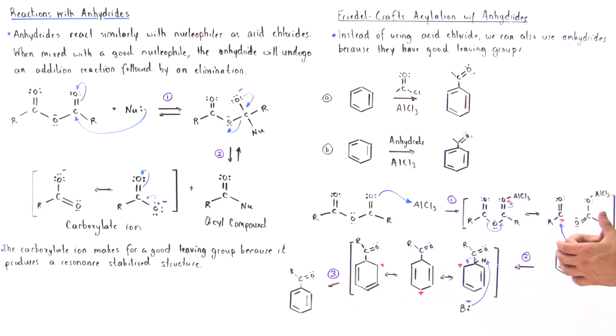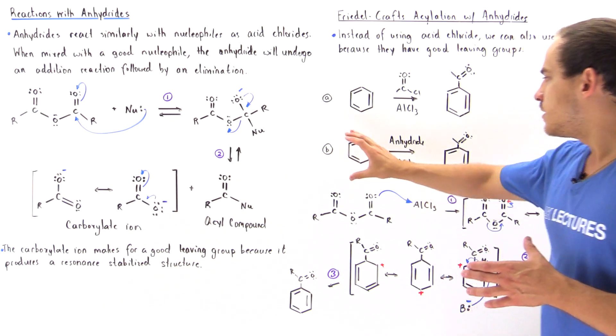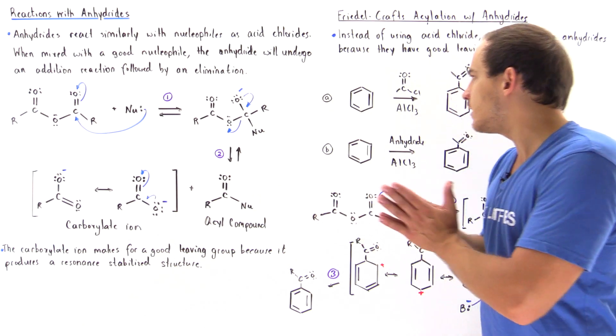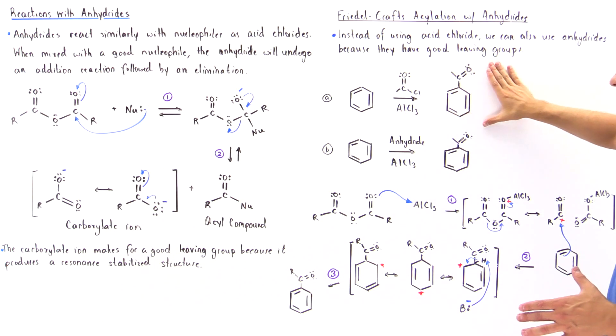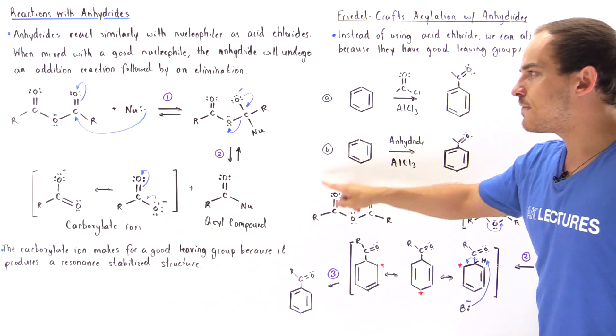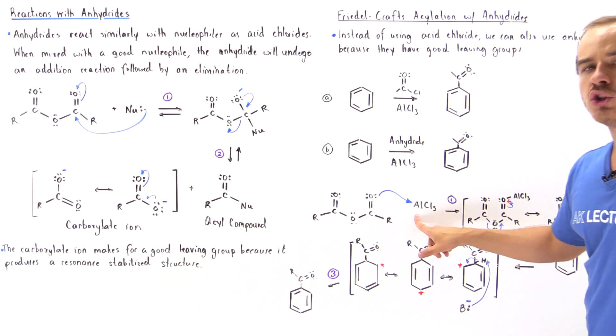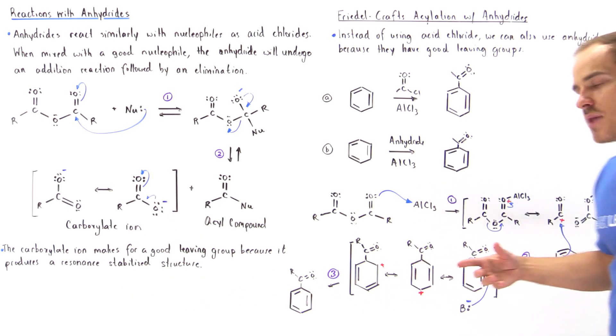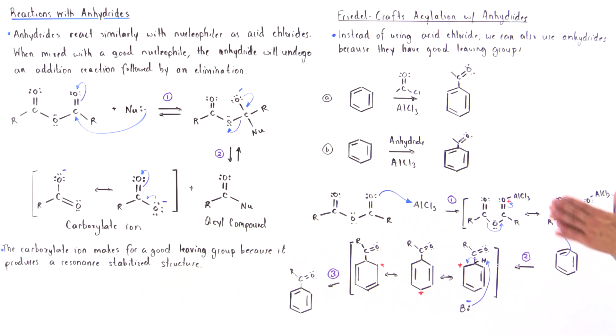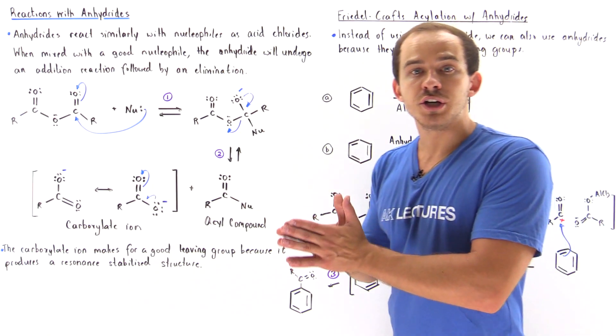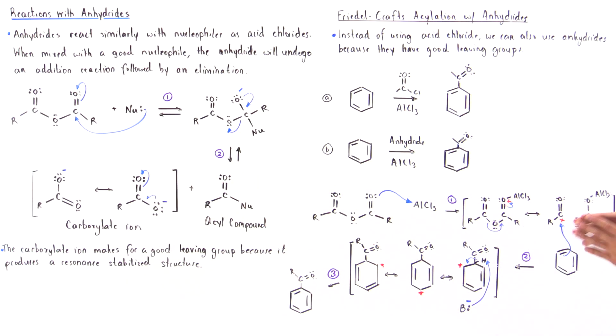So let's look at the reaction mechanism of this particular reaction. It's basically analogous to the reaction mechanism of this. So in the first step, we react our anhydride with our aluminum chloride to form a resonance stabilized intermediate that will play the role of the good electrophile.